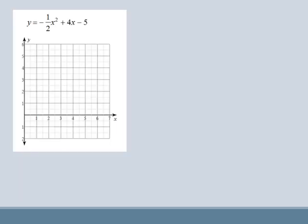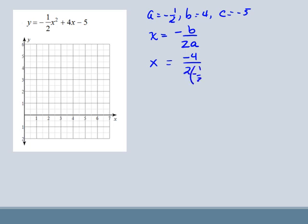We've got two more examples. So now my a is negative 1 half. So this is going to be a little bit different. B is 4 and C is negative 5. So x equals negative b over 2 times a. So in this case, x is negative 4 over 2 times negative 1 half. It's just a complex fraction. So we're going to do the bottom. Negative 4. Remember, this is 2 over 1. Or you can look at 1 half of 2 is 1. But it's going to be negative 1 because a negative times a positive is a negative. So we get 4.